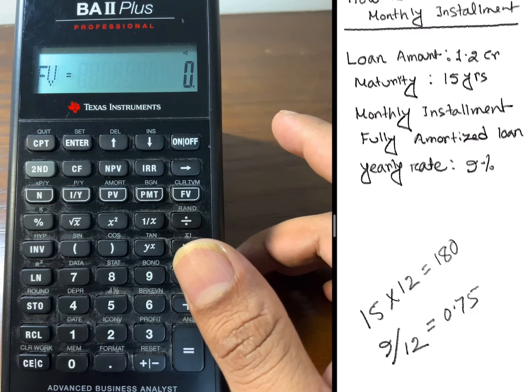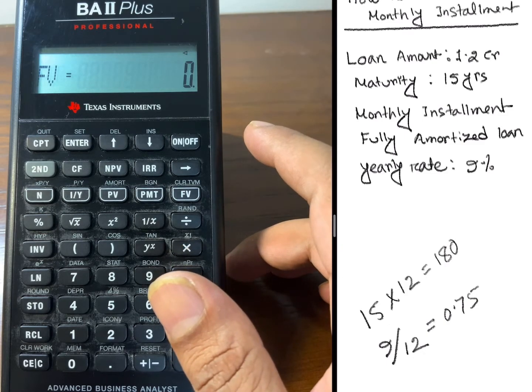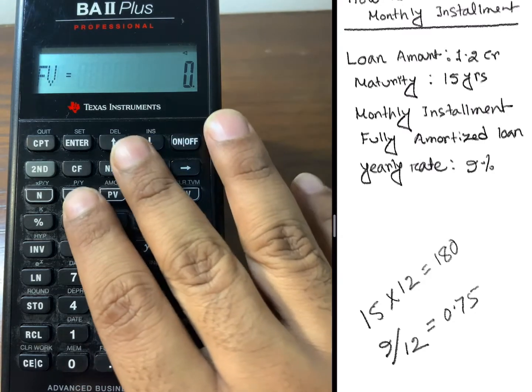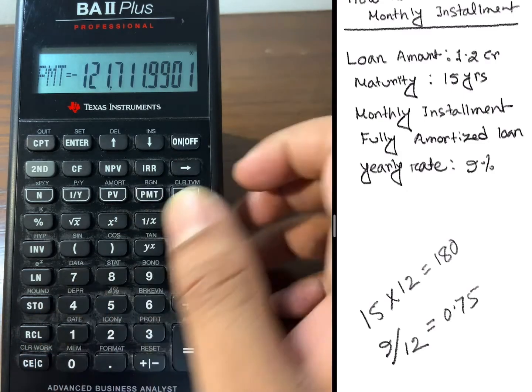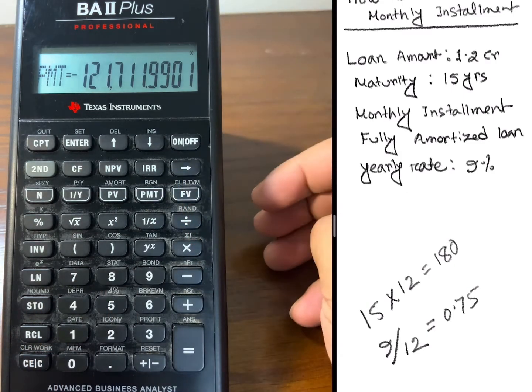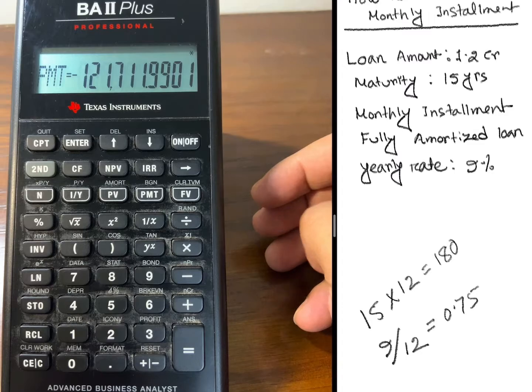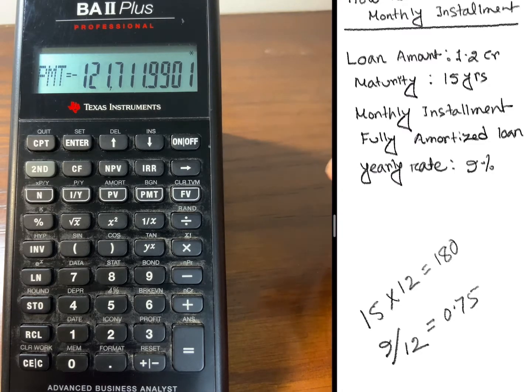Now I need to calculate the PMT, which is the monthly installment. What I'll do is press CPT and then press PMT. So the monthly installment is 121,711.99. So roughly it is 121,712.